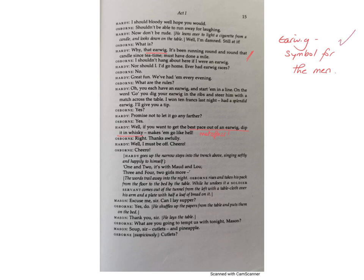The earwig is a useful symbol because it acts as a metaphor for the men: this poor little creature spends its time running round and round the trenches pointlessly, without any idea what it's doing. When the men have earwig races, it's being manipulated by higher authority — just like the soldiers themselves. Ironically, Hardy's suggestion to dip an earwig in whiskey to get the best pace out of it is exactly what Stanhope seems to be doing to himself. The earwig becomes a symbol of waiting, futility, helplessness, and how insignificant and ultimately disposable the men sadly are to the command of the British army.